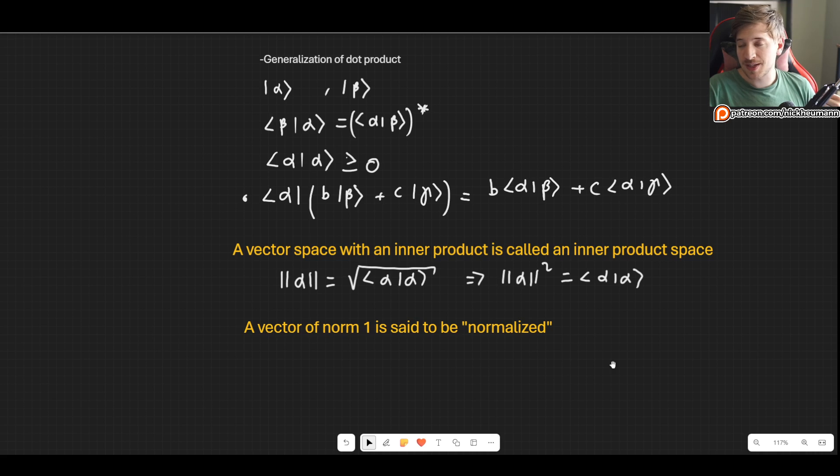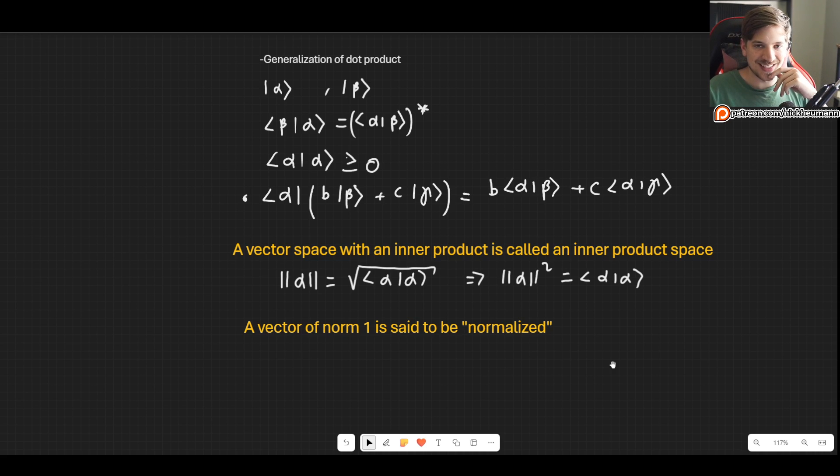Another very important concept is that a vector of norm one will be said to be normalized. Normalization in quantum mechanics is one of the most important things that we want. Since we're dealing with probabilities, we want the probabilities to be normalized. It's one of the main things that we have done in this channel.